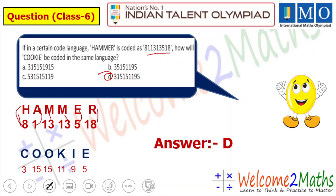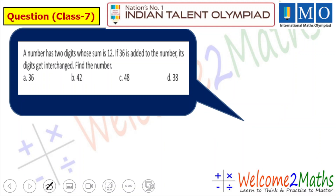Let us solve one more question from class 7. A number has 2 digits whose sum is 12. If 36 is added to the number, its digits get interchanged. Find the number.